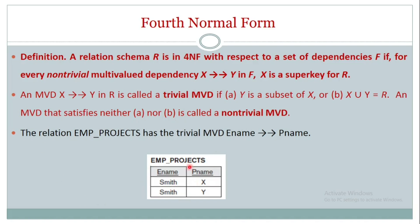Here is an example of trivial multi-value dependency. We have the dependency: employee name multi-determines project name. First rule: is project name a subset of employee name? No, that condition fails. Second rule: is employee name union project name equal to R? Yes. So the second condition is true, and we conclude this is a trivial multi-value dependency.